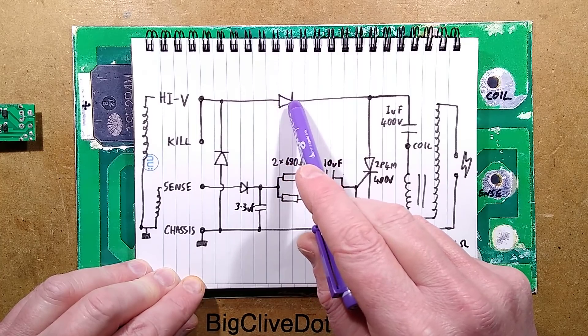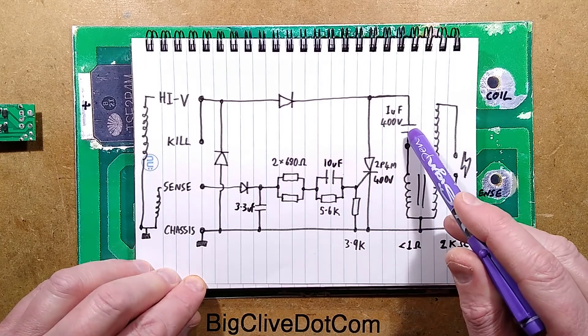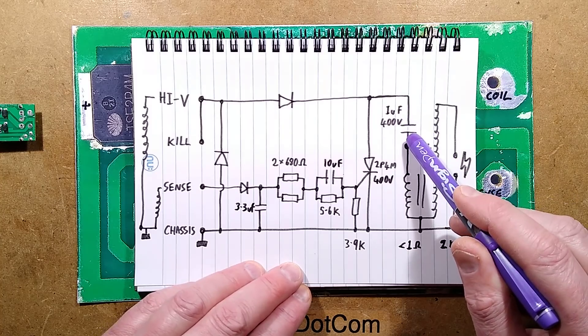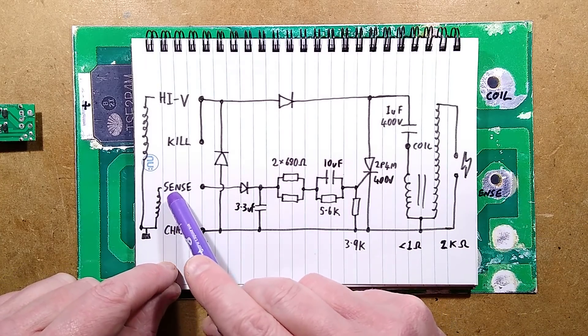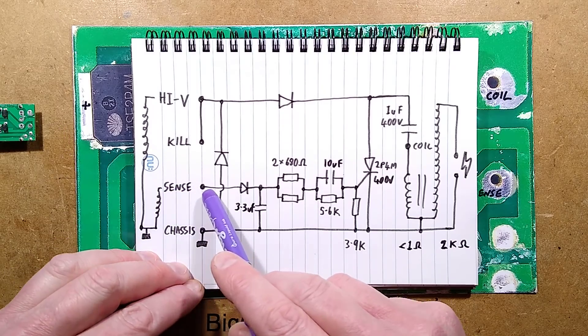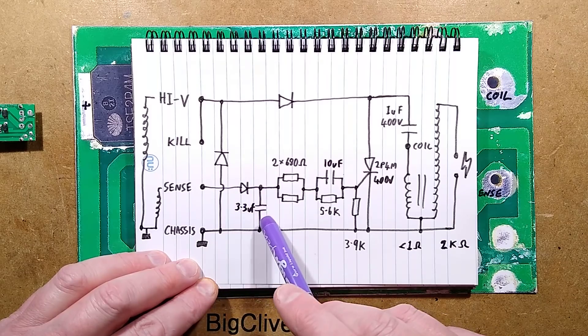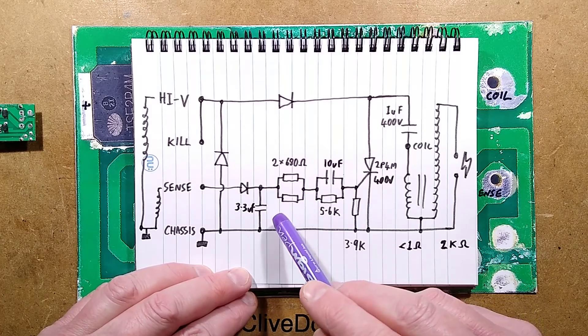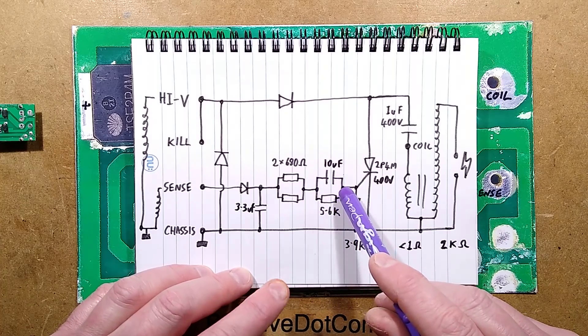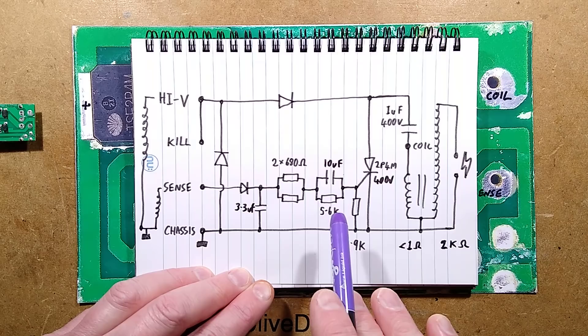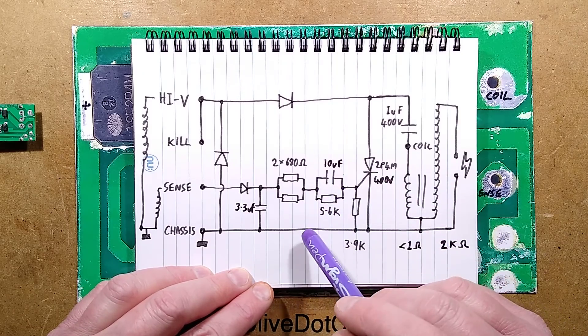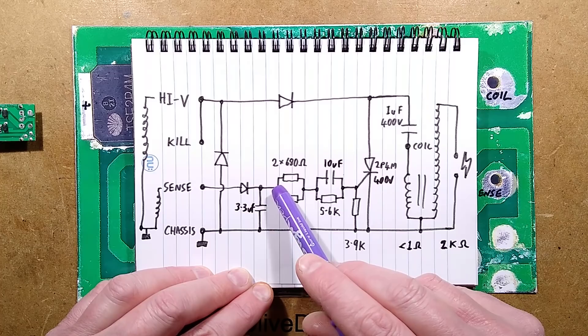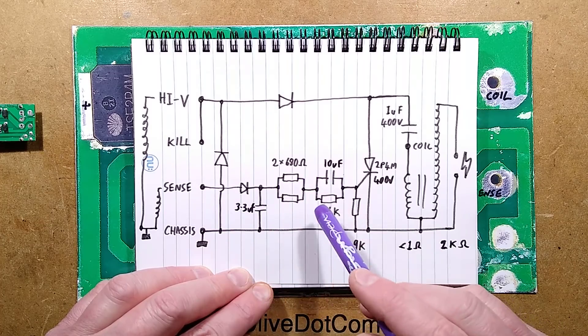The high voltage comes in and charges via this diode, charging that capacitor, and the capacitor is in series with the primary of the ignition transformer. When the sense coil is detected, the magnet passes it and induces current. That comes via this diode, there's a 3.3 microfarad filter capacitor, and then strangely two 680 ohm resistors in parallel, so that's 340 ohms. Then a 10 microfarad capacitor - possibly to allow... I'm not sure why they've got that, it's a very strange arrangement here.